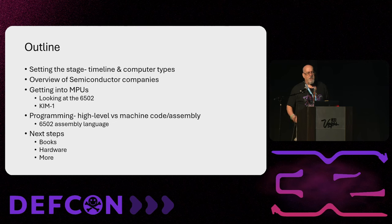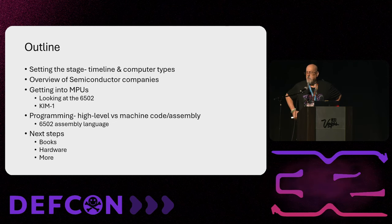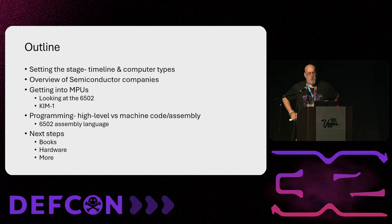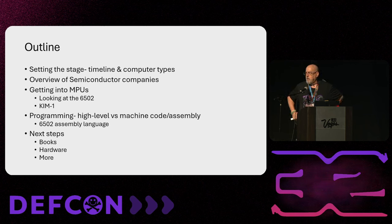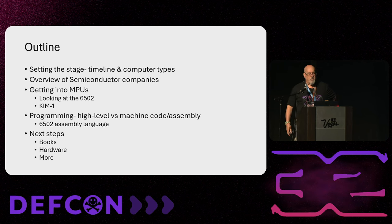So the outline: we'll talk about some of the timeline, computer types, where we get into some of the semiconductor companies — which I find kind of interesting. We'll look at more about microprocessing units, more at the 6502, and a little bit about assembly language, which is either something that is really interesting to you or freaking boring. And then I put together a lot of good resources, so I encourage you guys to take pictures of those slides.